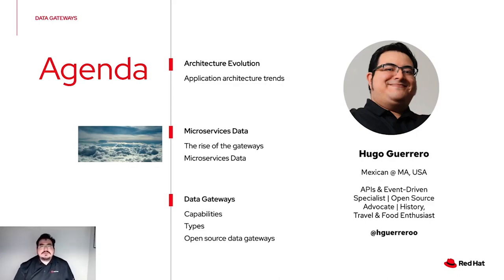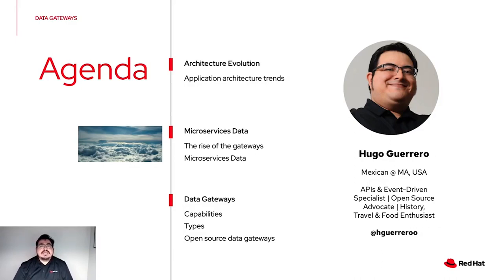Let me introduce myself — my name is Hugo. I'm Mexican and currently based in the Boston area in Massachusetts. I'm working with Red Hat as an API and messaging / event-driven specialist. I've been an open source advocate since I first started working with the JBoss Enterprise Application Server around 2004, so it has been a long journey. I'm also a history and travel enthusiast, and here's my Twitter handle if you want to follow the conversation or continue posting on these topics.